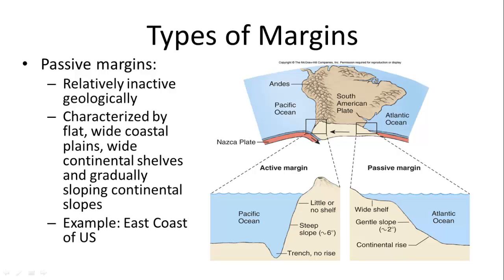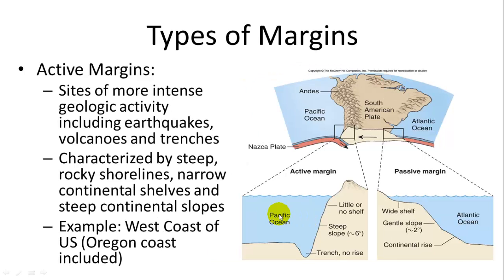There are two types of margins. A passive margin is relatively inactive, seen on the Atlantic's east coast — characterized by a flat, wide shelf that gradually slopes. On the west coast are active margins, geologically active with volcanoes and mountains where continental and oceanic plates are converging. Active margins have a much steeper slope, little or no shelf, and rocky coastlines, whereas passive margins tend to be sandy.